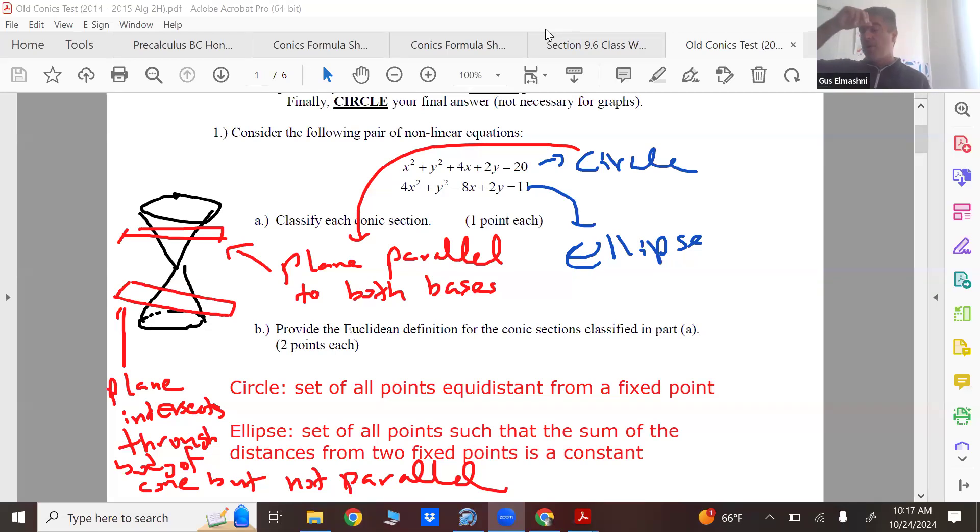If you were to measure the distance from a point on the ellipse to one focus and to the other and add those two segments, that sum will always be a constant which actually is 2a. How do you intersect a plane with a double napped cone to get each of these shapes? For a circle, make sure the plane's parallel to both bases.